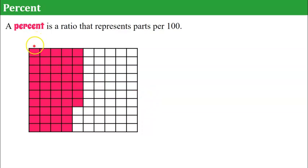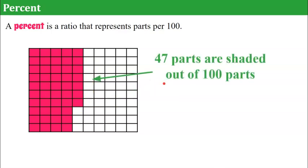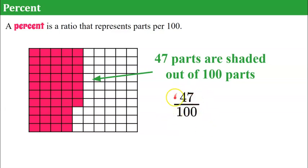Each one of these columns represents 10 of the squares. We have 47 parts of this illustration shaded pink out of the 100. When we write that as a ratio, 47 are shaded out of the 100 that are there — our part and our whole. When we write that as a percent, it's 47 percent.